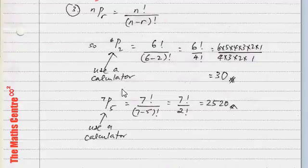And just to drive home the point, 7P5 will be 7 factorial over 2 factorial, because this will be n minus r, which will be (7-5) factorial. So, 7 factorial over 2 factorial, you work it, and you'll get 2520.